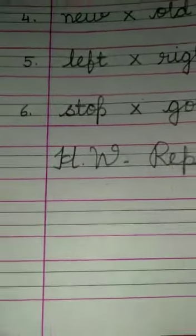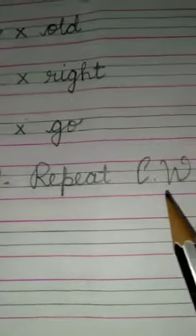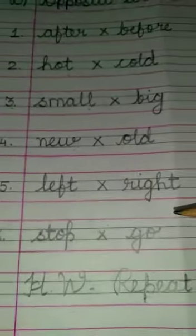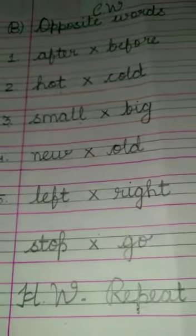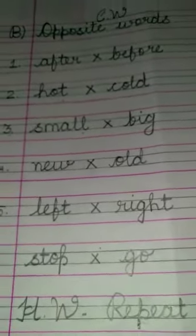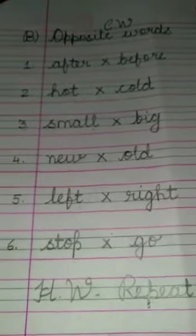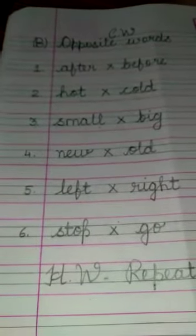And below that you will write your homework H-W stands for homework. Repeat CW once that means you will write this six opposite words one more time as your homework in a good handwriting and without making any spelling mistake. Okay children bye and have a nice day.